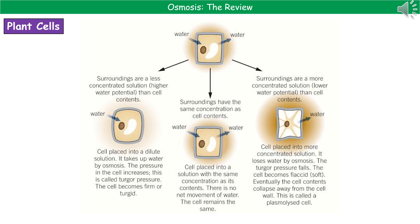Applying osmosis in different settings, the first one to consider is what happens in plant cells. From the structure of a plant cell, around the outside we have a cell wall made of cellulose — a rigid structure that gives it support. This is vital when thinking about osmosis in plant cells. If we take a plant cell and place it into a solution that has the same concentration as the contents inside the cell, water enters at the same rate that it leaves. The cell remains the same — it won't change in mass or length, as shown in the middle of the diagram.